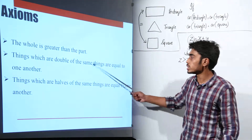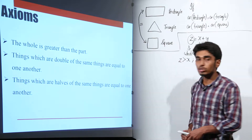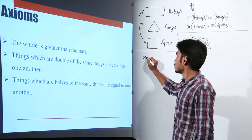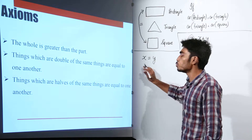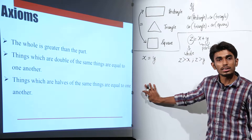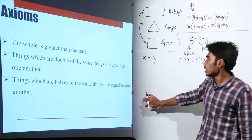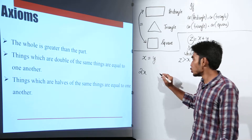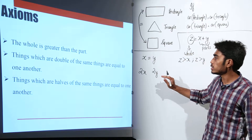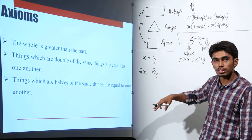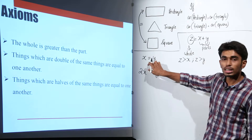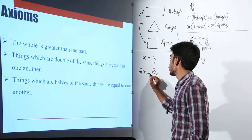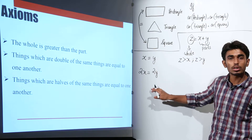The next axiom says: things which are double of the same things are equal to one another. For example, if x equals y, then the double of x is 2x and the double of y is 2y. Since x and y are equal, their doubles will also be equal — so if x equals y, then 2x equals 2y.